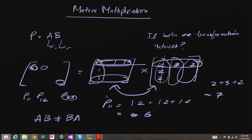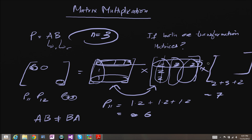Another thing is that matrix multiplication is also known as concatenation. Why it's known as concatenation is that if you have a product of n transformation matrices — let's just say n equals 3 — so you have three matrices, let's say A, B, and C, and you take the product of all three.